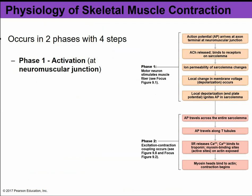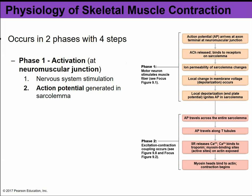Skeletal muscle contraction occurs in two phases with four steps total. Phase one is activation at the neuromuscular junction — the nervous system must stimulate the muscle. Step two of phase one is generation of an action potential in the sarcolemma, which is the cell membrane of the muscle fiber.